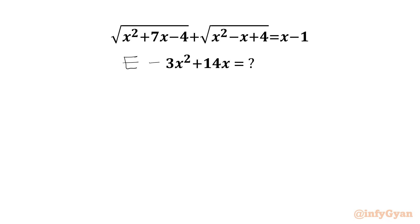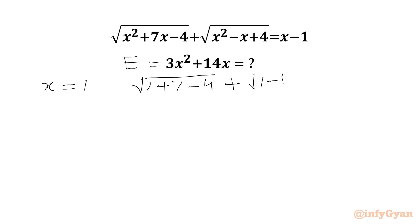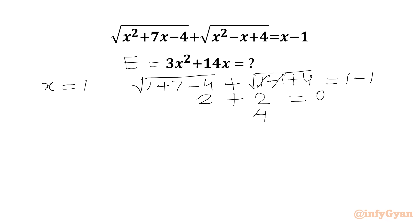Let the required expression be E. Now I will check our equation at x equal to 1. The LHS becomes square root of (1 + 7 - 4) plus square root of (1 - 1 + 4), and the RHS becomes 1 minus 1 which is 0. So square root of 4 is 2, plus square root of 4 is 2, giving 4, which does not equal 0. So for our equation, x cannot be equal to 1.